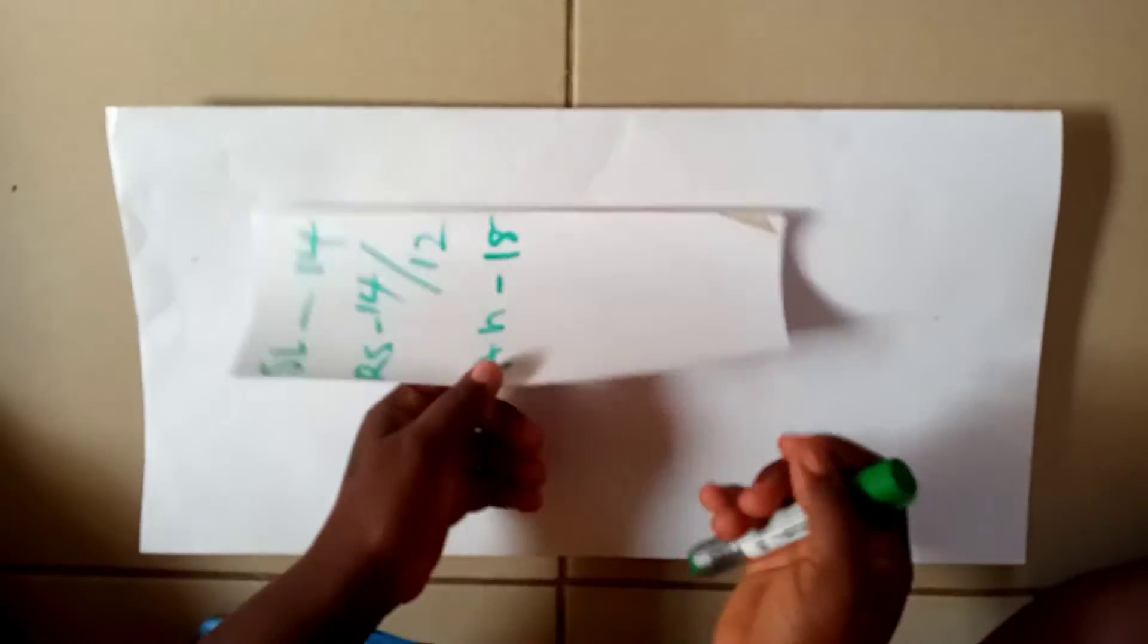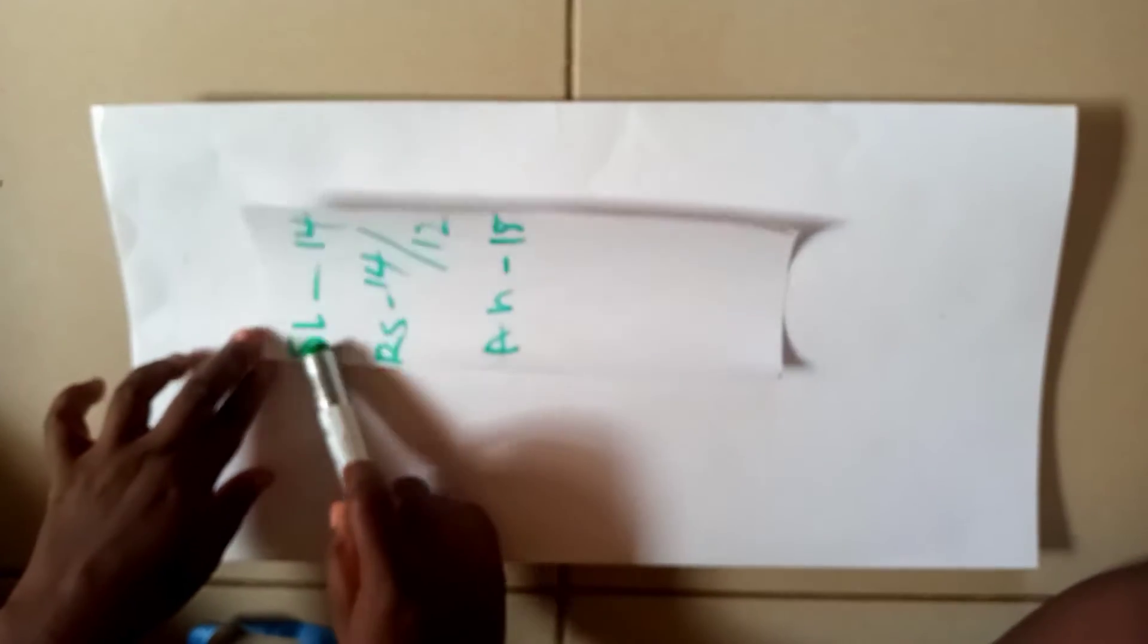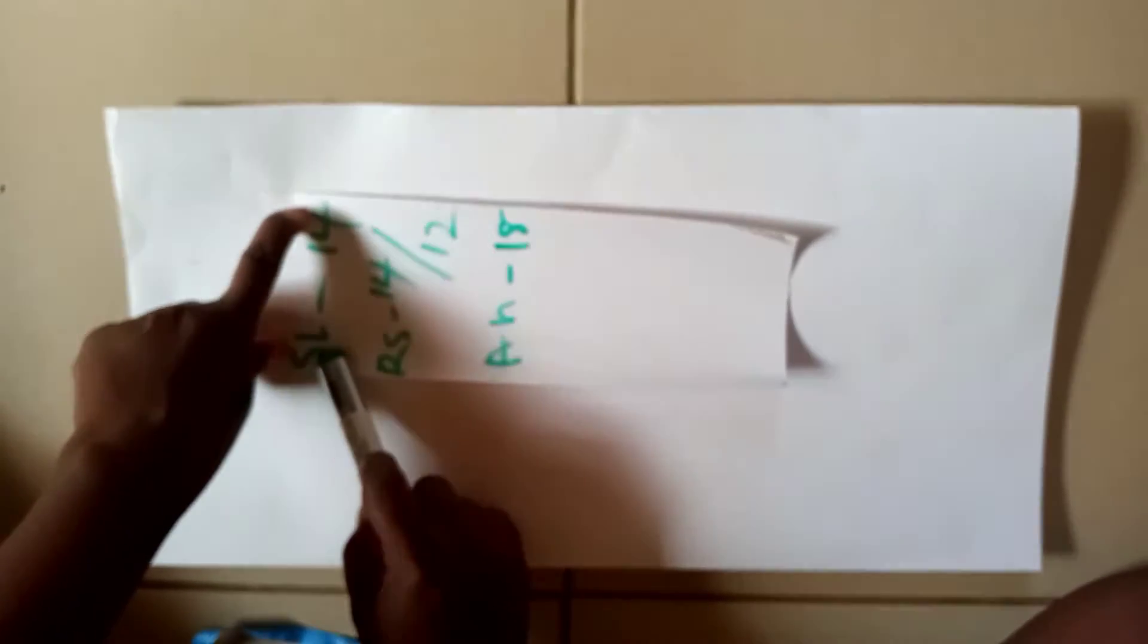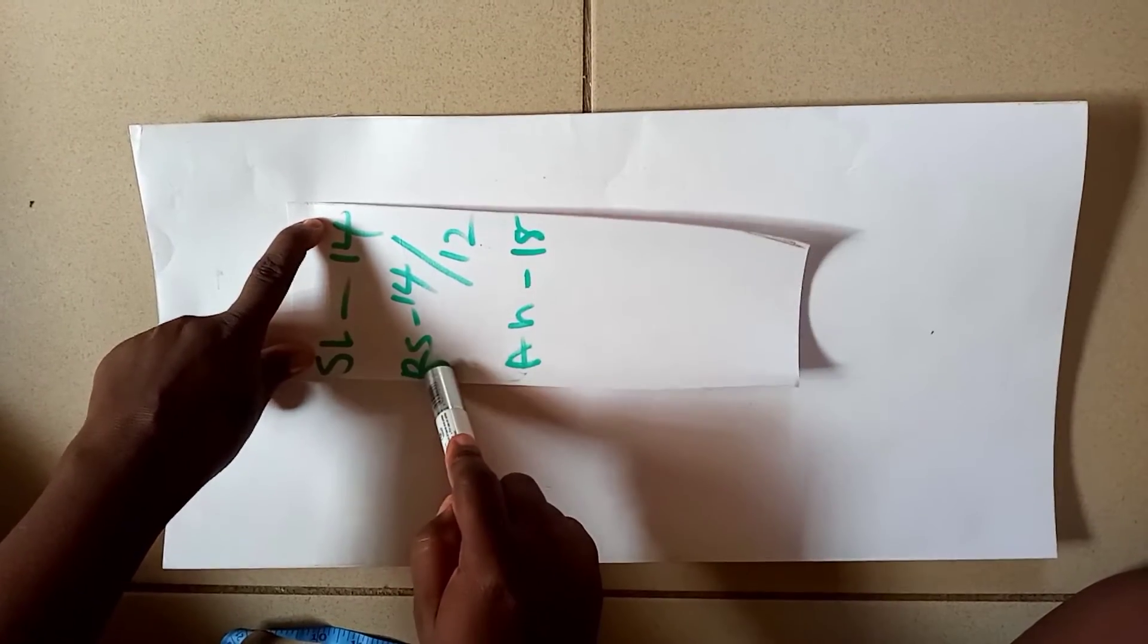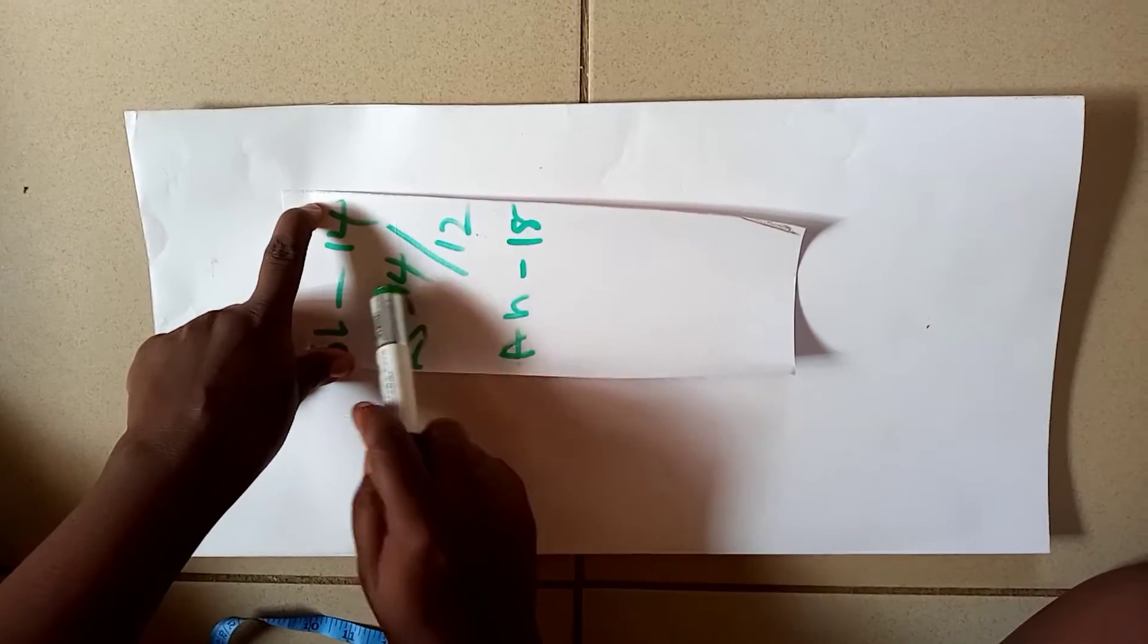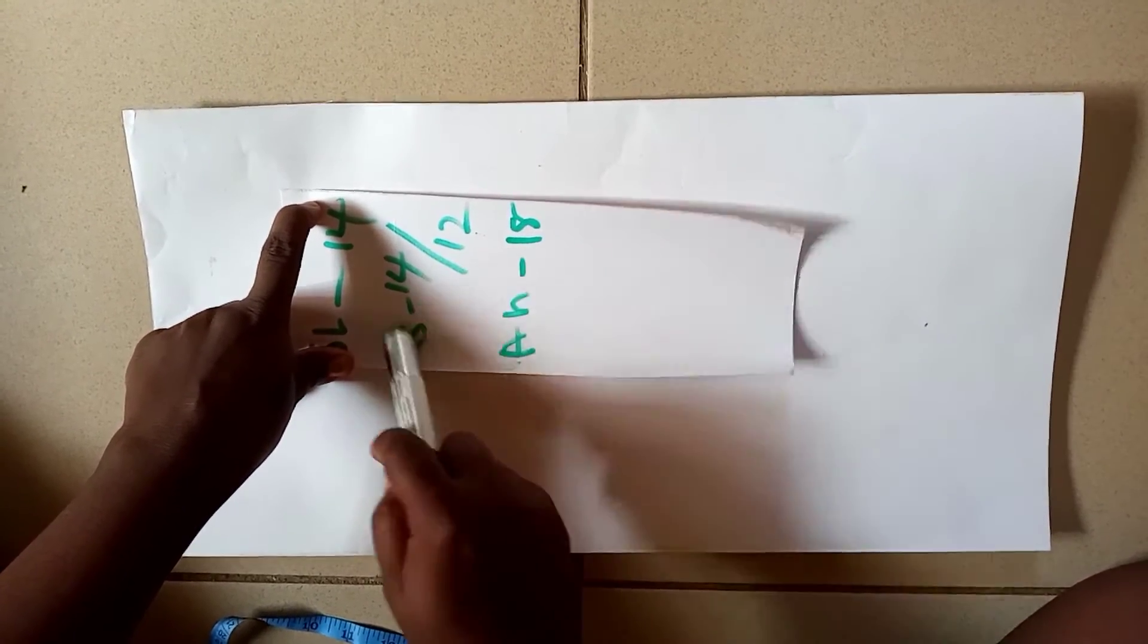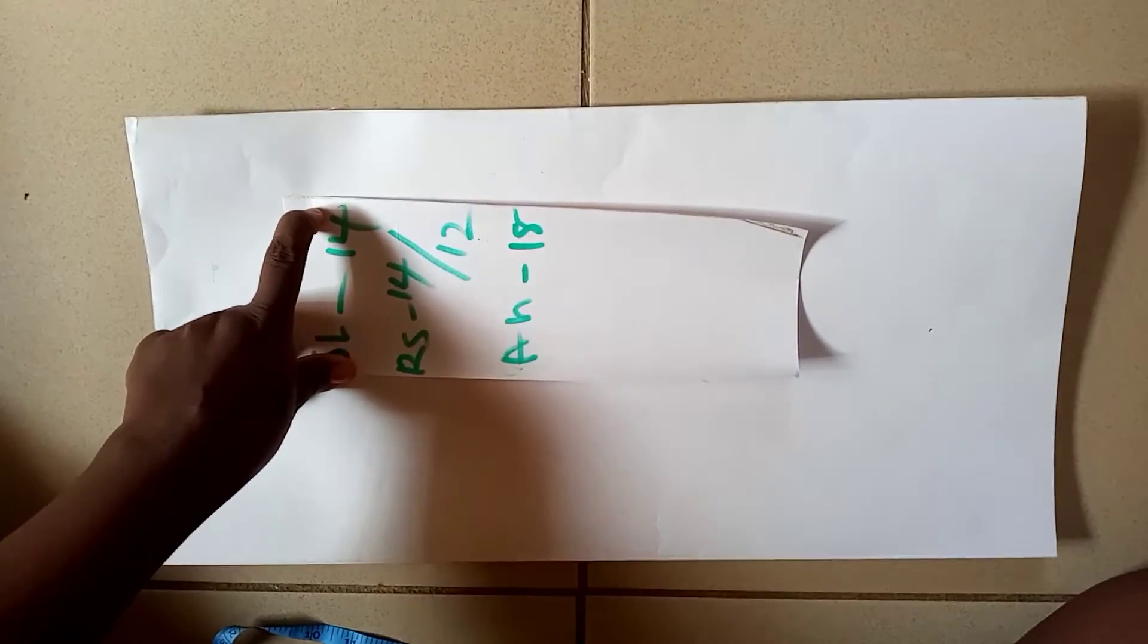This SL is your sleeve length - the place you want your sleeve to stop. That's your sleeve length. Then this one is round sleeve. If you look at this place now, I have 14 over 12. So this 14 is representing the fuller part of your arm, the fuller part of your arm.